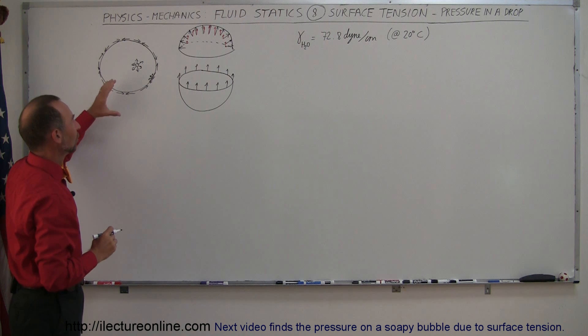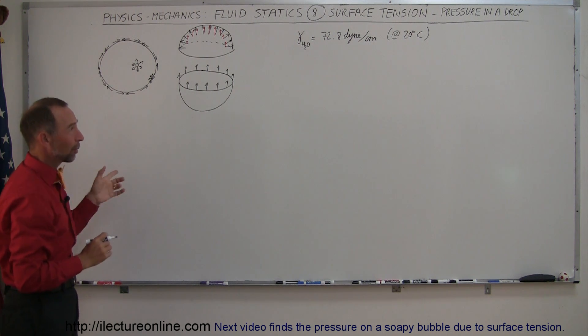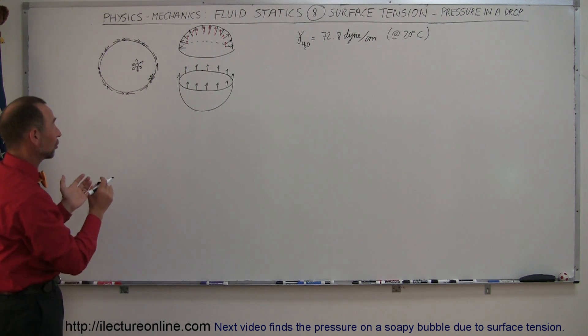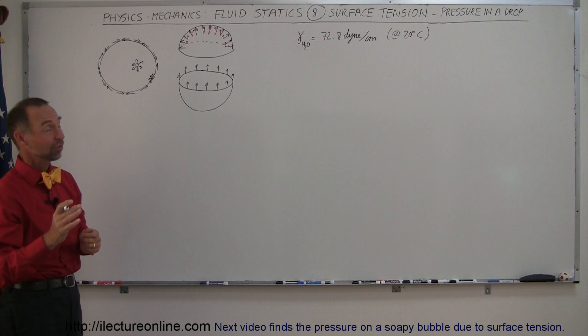And because of the surface tension, there's a certain amount of pressure that builds up inside a water drop. And so what we're going to try and figure out here is what is that pressure of a water drop? And of course, that also will depend upon the size of water droplets.